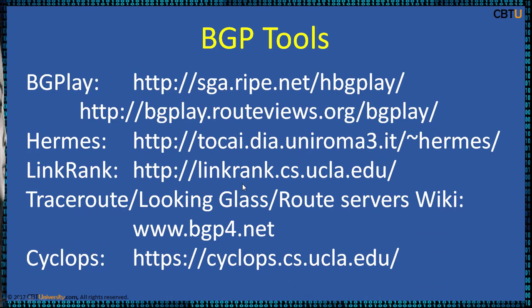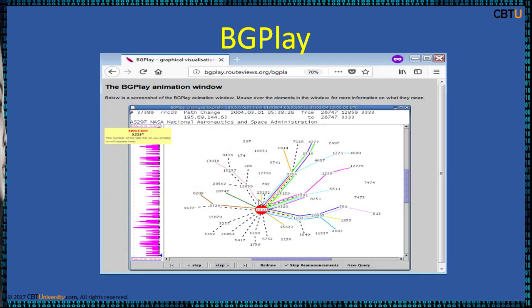We are going to cover more about these BGP tools in Cisco Certification courses. This is RouteViews BGP Play — a Java application which displays animated drops of routing activity for a certain prefix within a specific time interval. It is graphical in nature, making it easier to understand how BGP updates affect routing. The BGP Play database stores the last 10 days of data provided by the RouteViews project data archive.